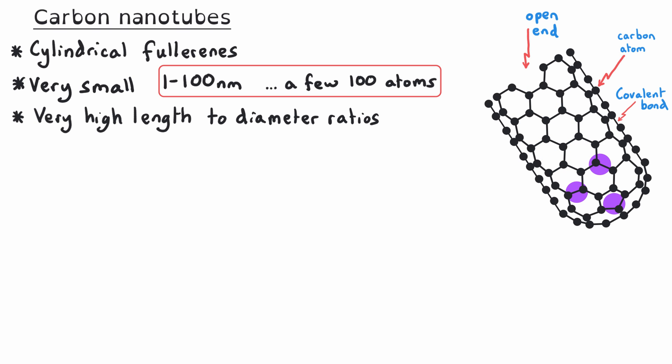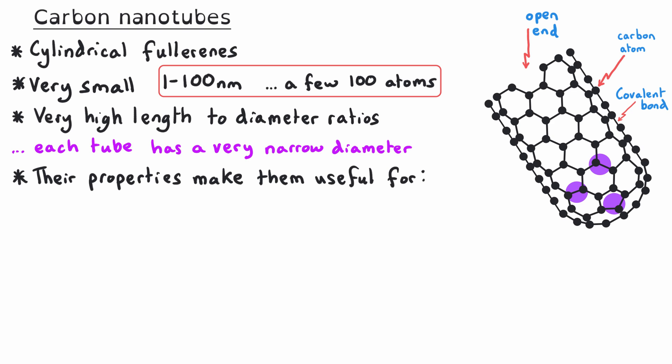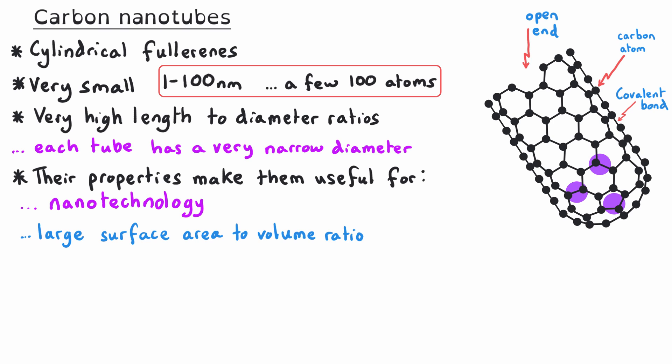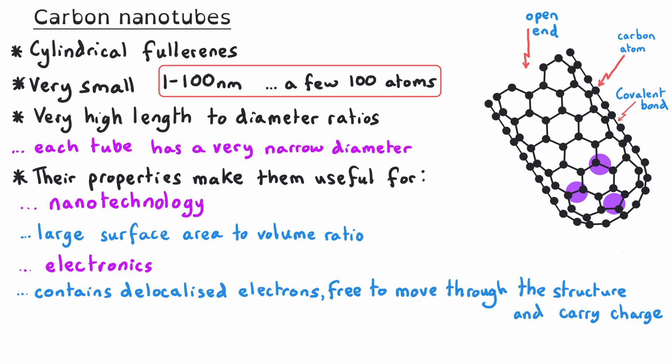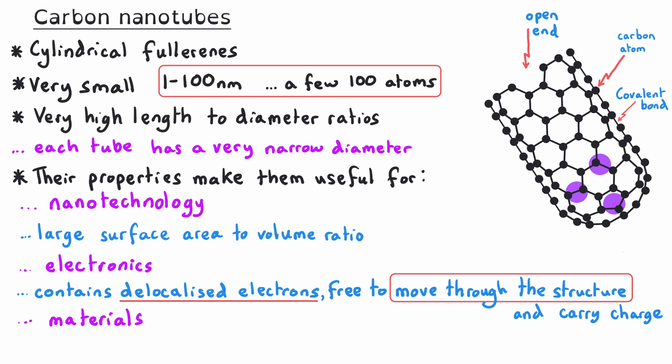Carbon nanotubes have very high length to diameter ratios, since each tube has a very narrow diameter. Their properties make them useful for a variety of things. They are useful in nanotechnology due to their large surface area to volume ratio. They can also be used in electronics to make very small components, because the carbon atoms in the nanotubes each have three covalent bonds, leaving one delocalized electron per carbon atom. This means there is a sea of delocalized electrons inside the nanotube, free to move through the structure and carry charge. Carbon nanotubes are also useful in materials such as building materials and badminton rackets, because they enhance stiffness and strength.